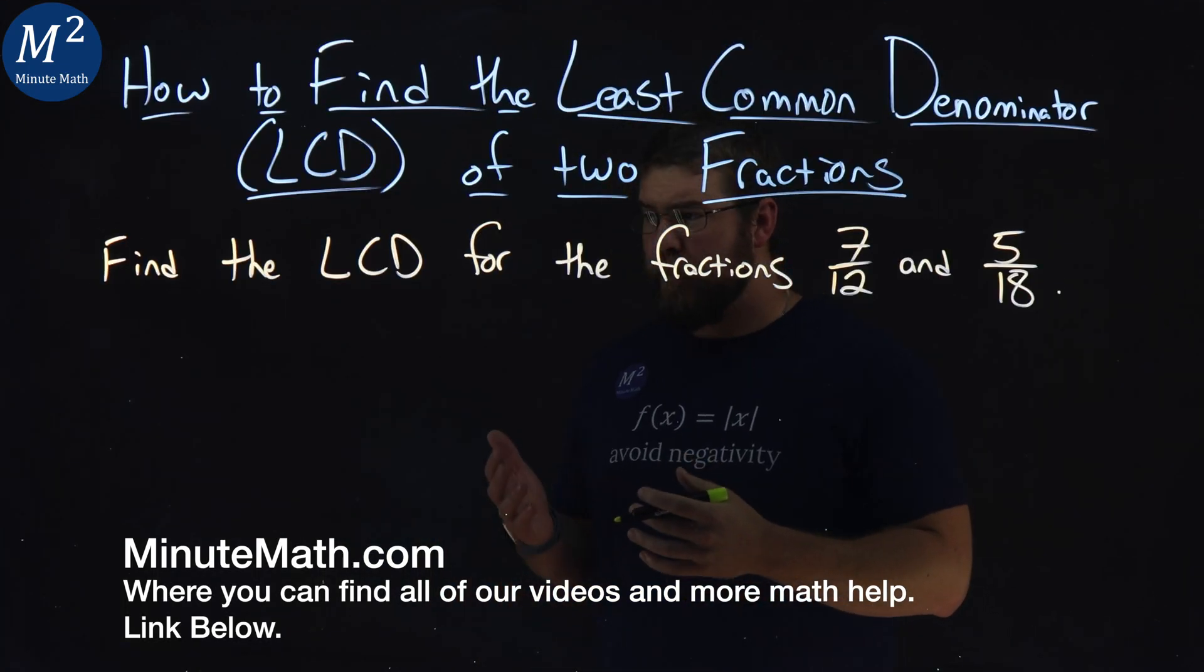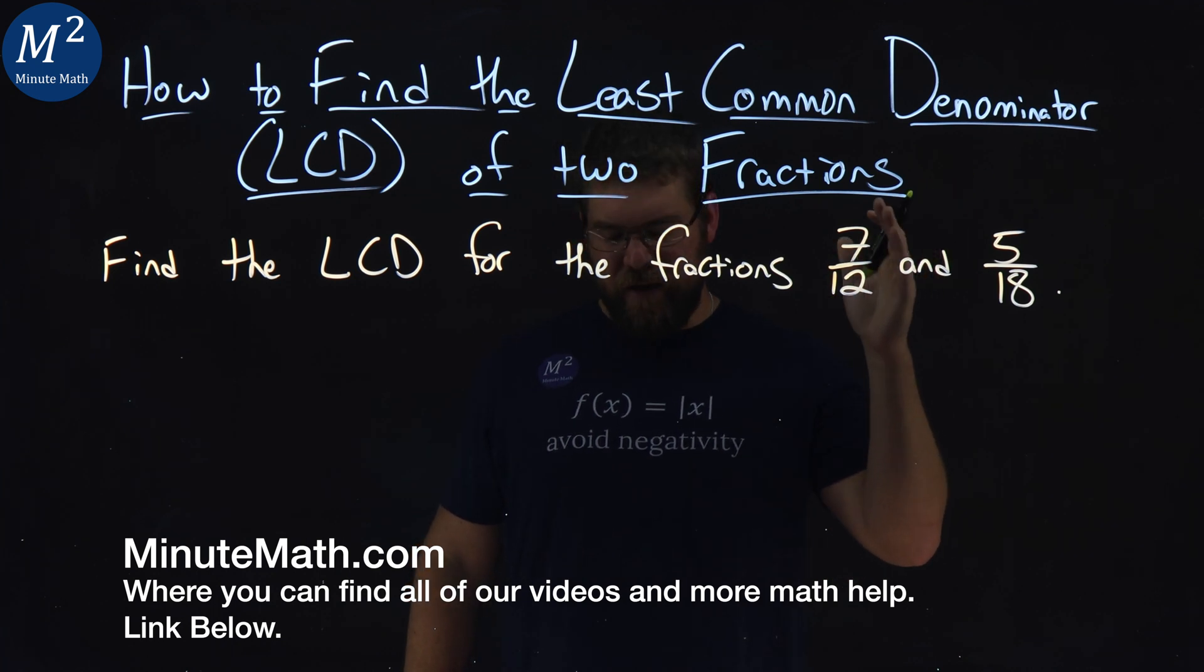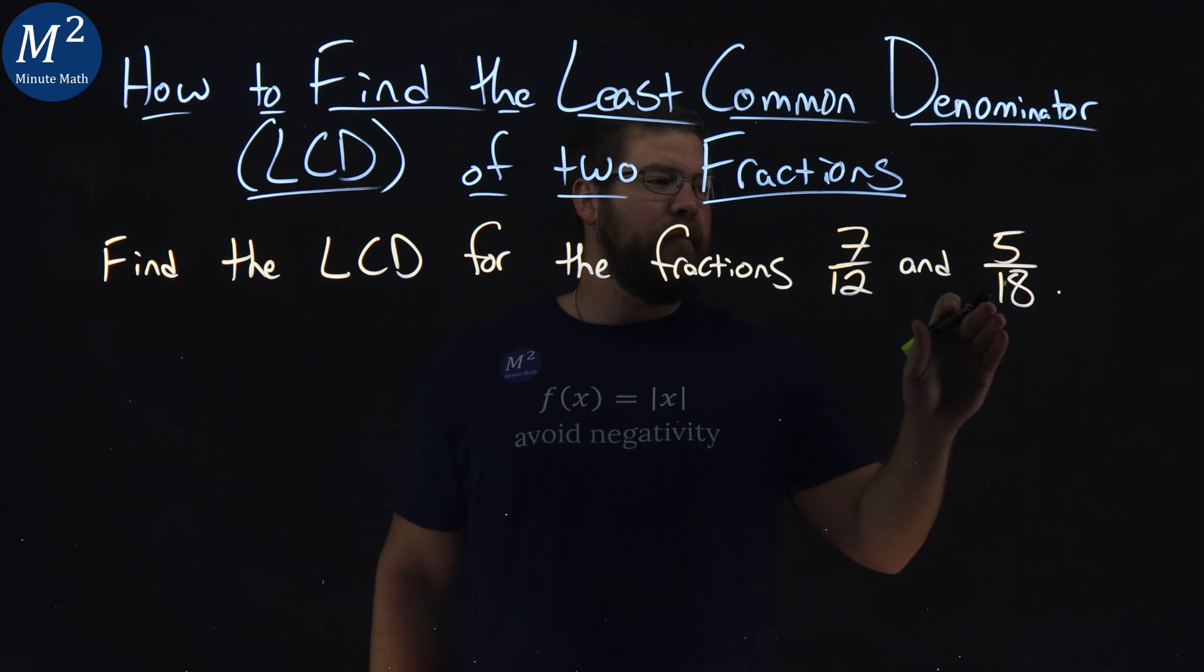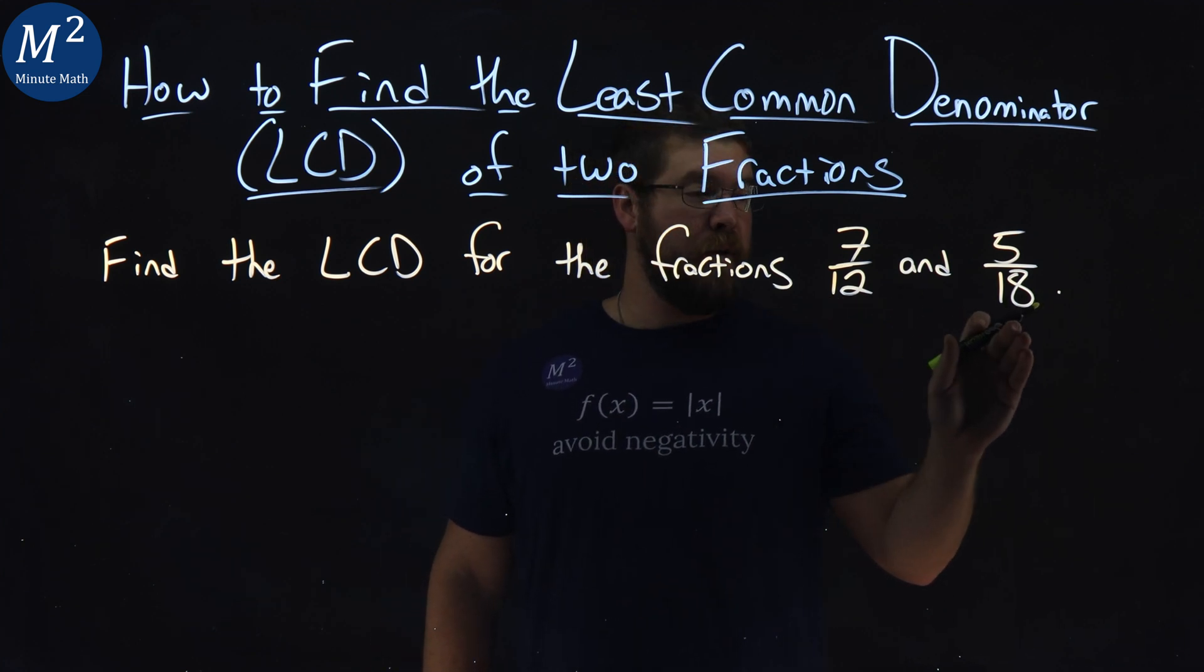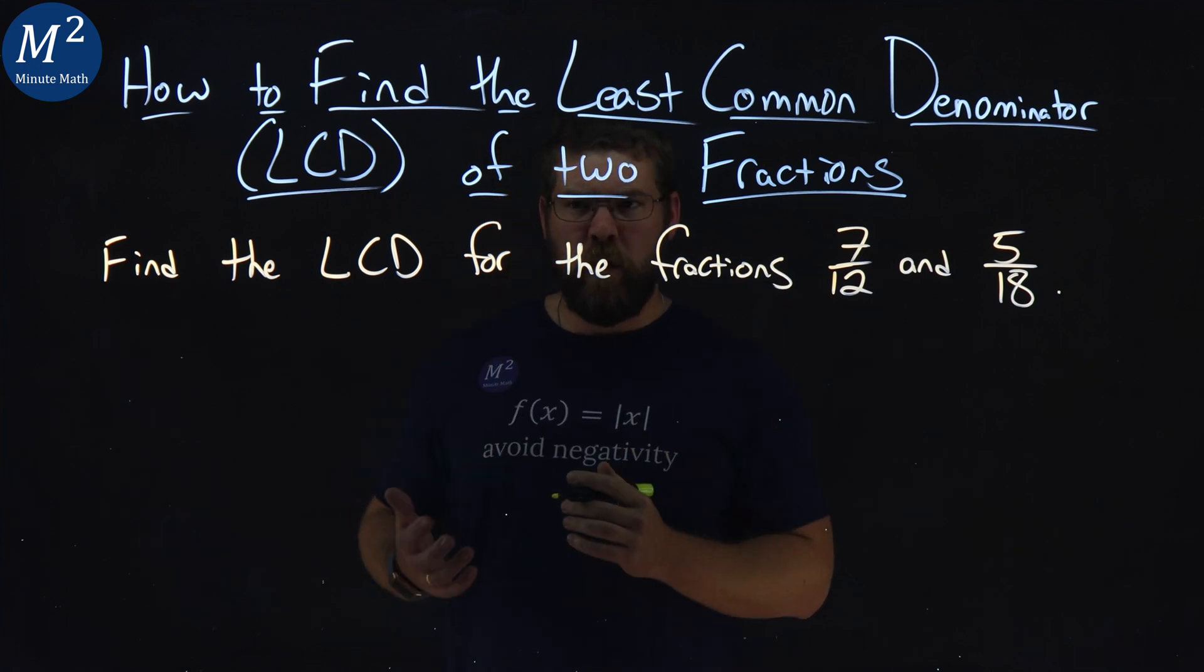We're given this problem here, to find the LCD for the fractions 7 twelfths and 5 eighteenths. We have to look first at their denominators. We have 12 and 18, and let's create a factor tree for each one of these.